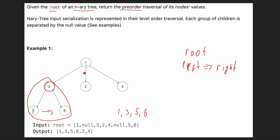We have visited all nodes in that subtree. Now we visit the next child from left to right, so we are visiting two. Two does not have any children. The last node we visit is four. And this is our result.